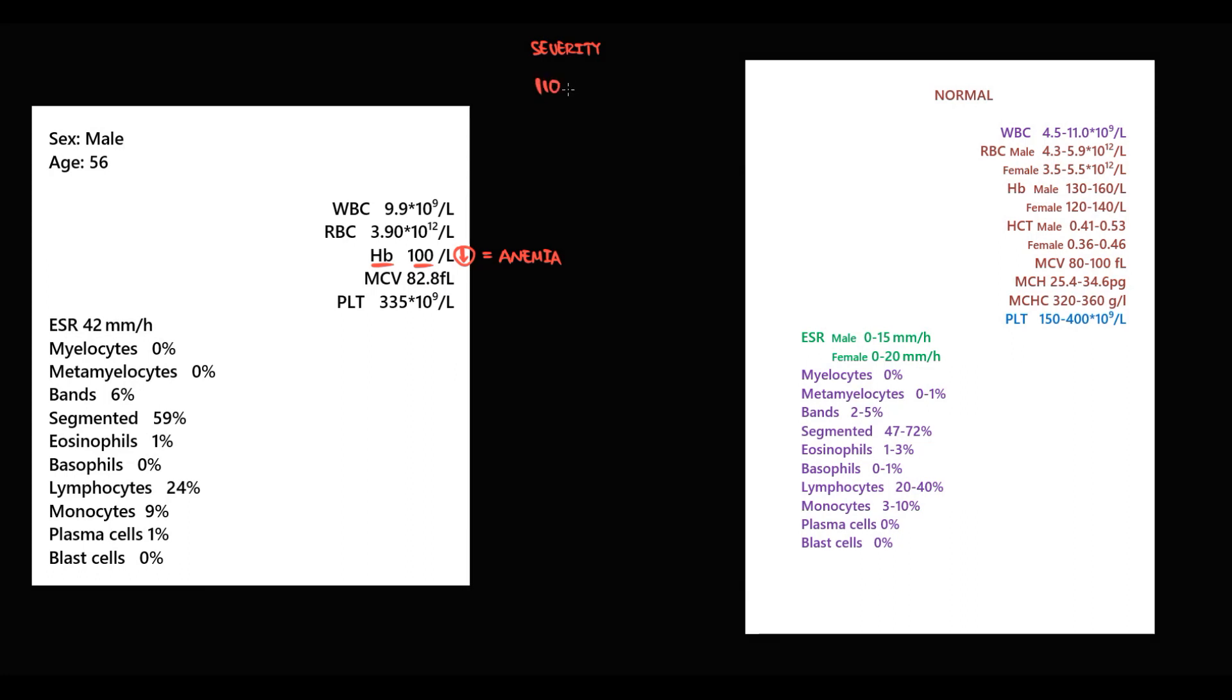To determine severity, we need to know two values: 110 and 80. Normal hemoglobin for males is 130-160. From 110 to the lower limit of normal is mild anemia, 80 to 110 is moderate anemia, and lower than 80 is severe anemia. In this case, hemoglobin is 100, so it's moderate anemia.